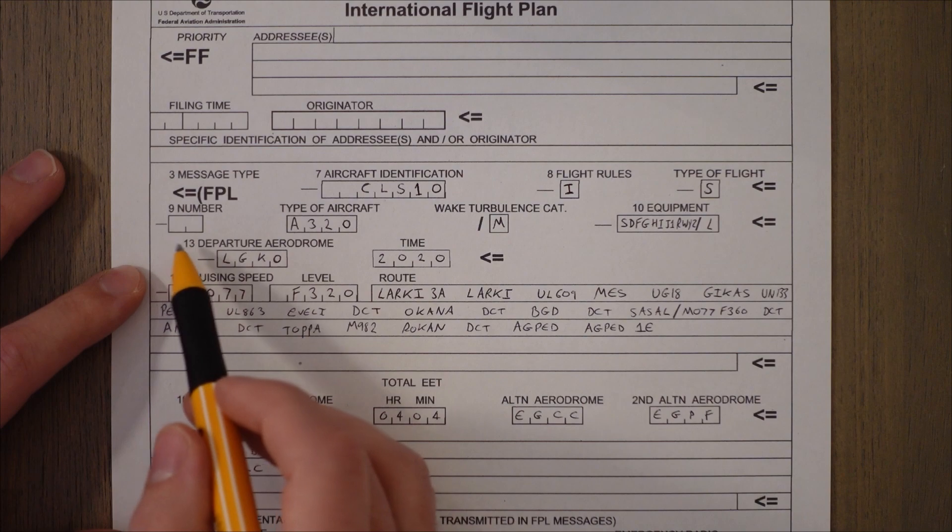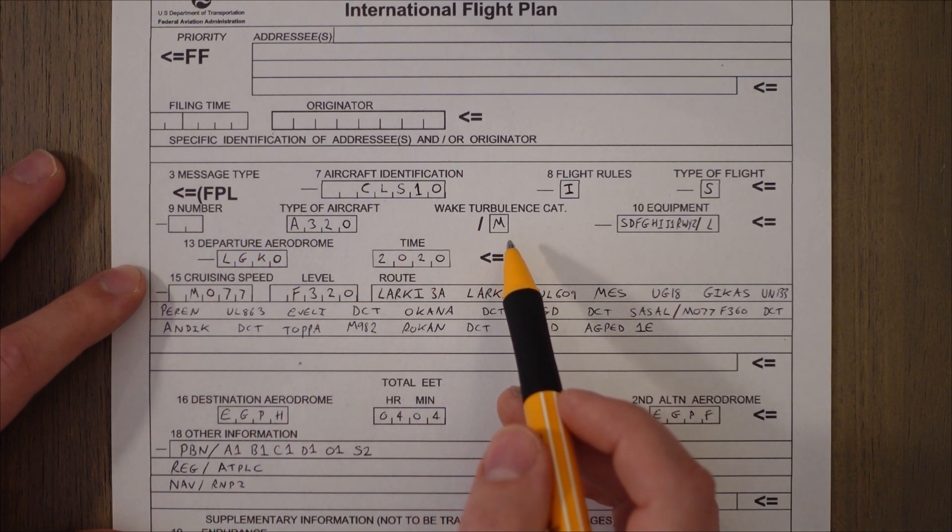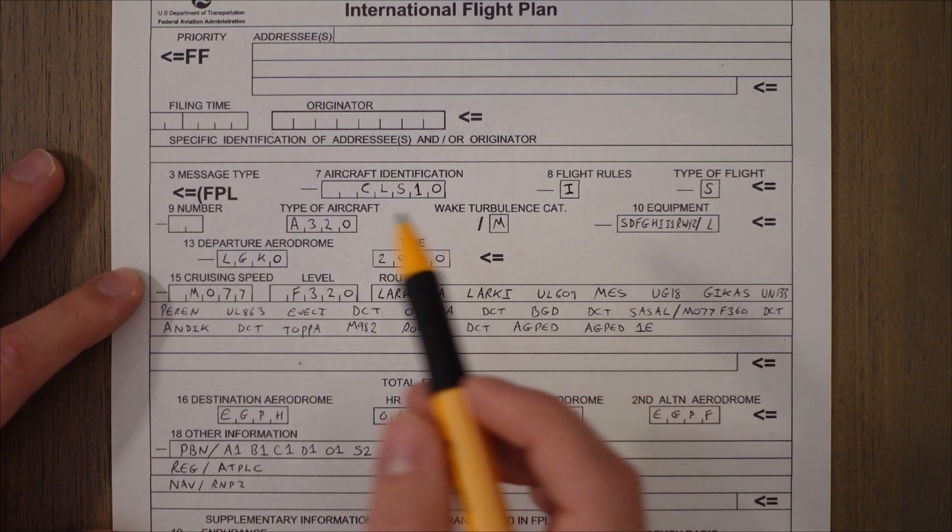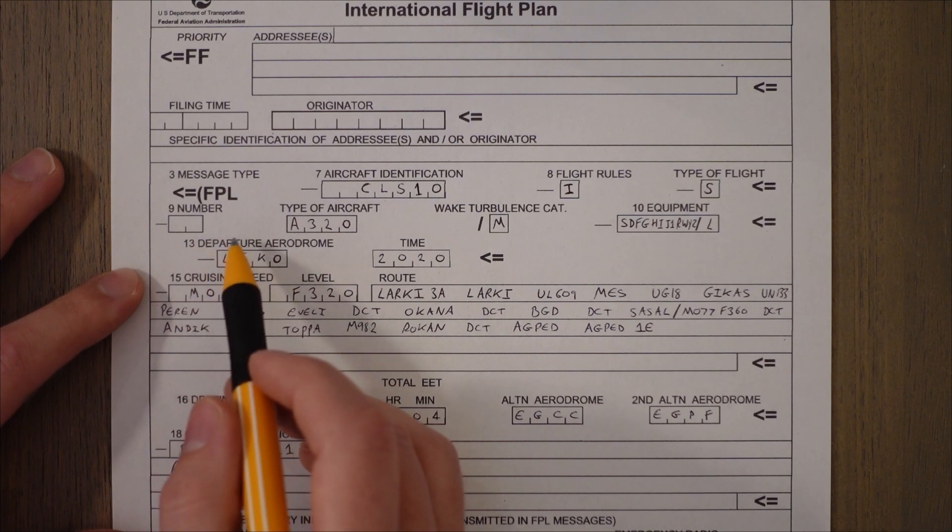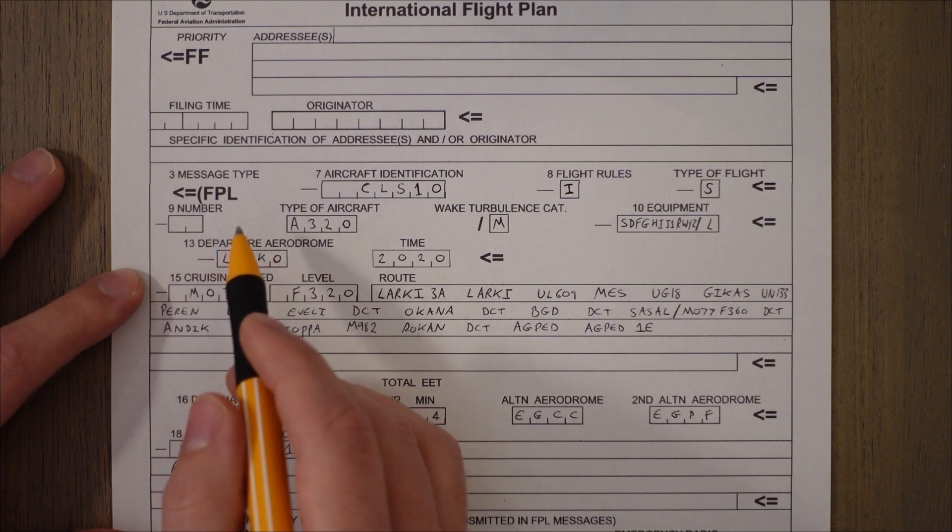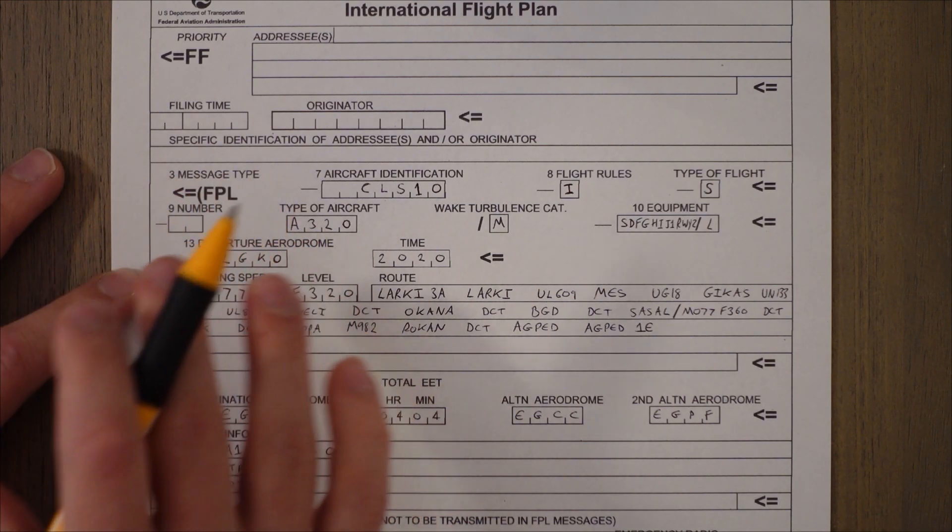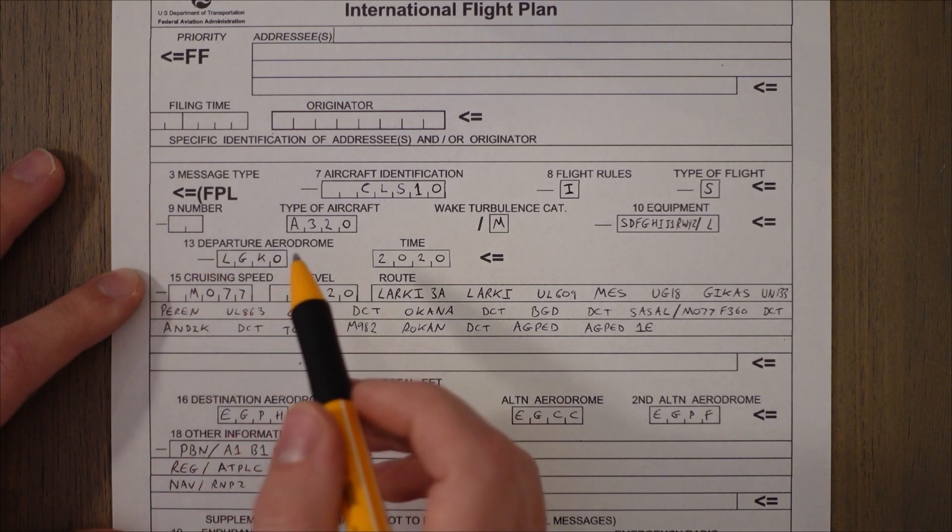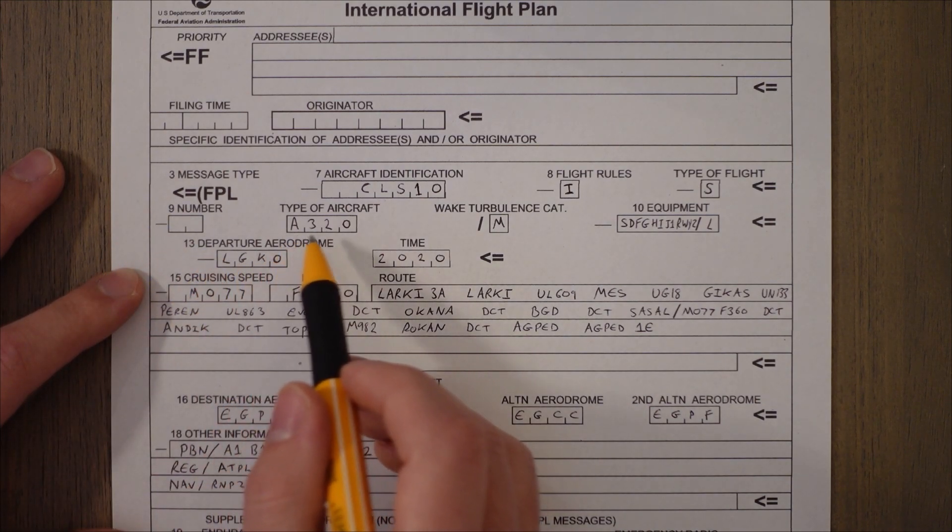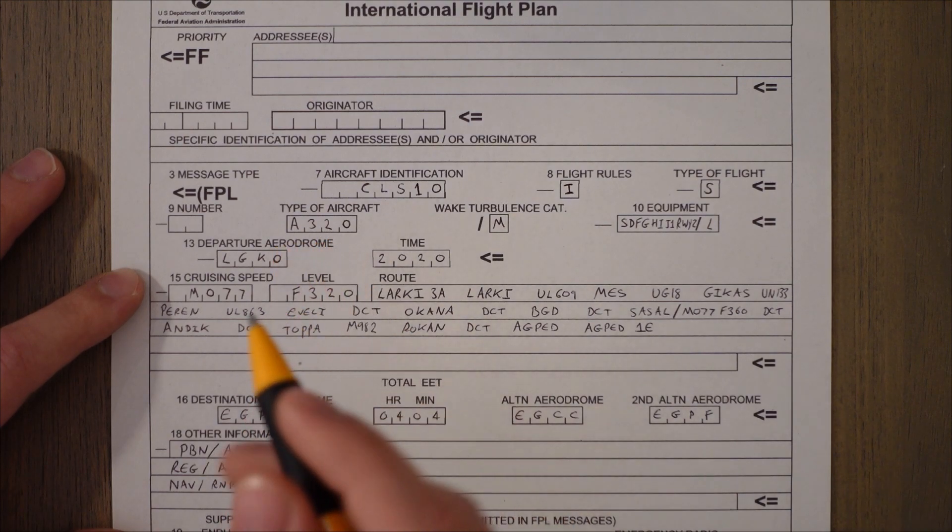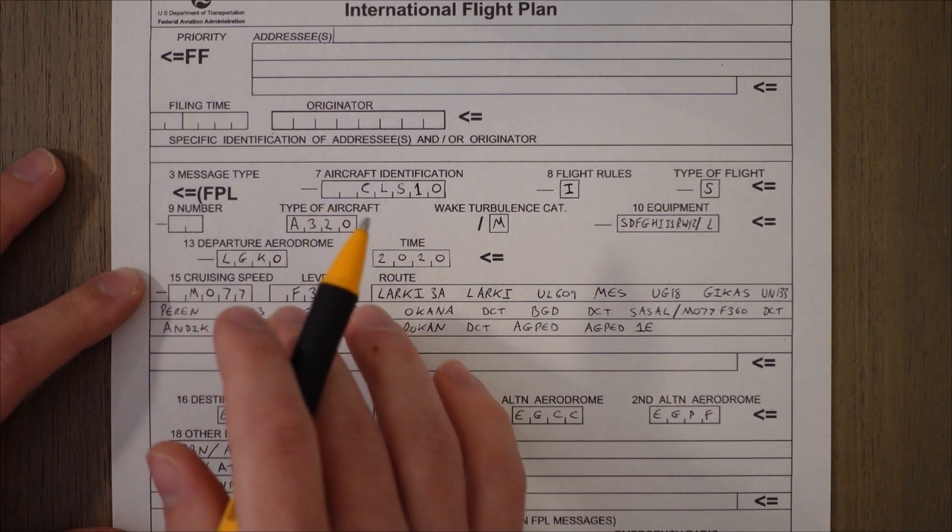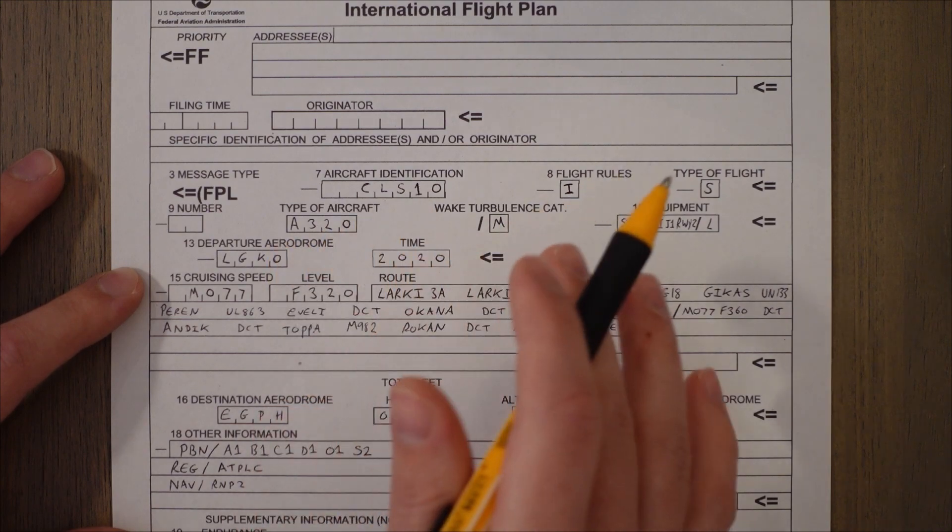Section 9 indicates the number, type, and wake turbulence category of the aircraft. So if we're doing formation flying we would enter more than one aircraft but if we leave it blank it's assumed to be one. So we're not going to fly in formation. Then the type of aircraft we're going to fly is an Airbus A320. All planes will have a specific code that can be found easily online and entered into this box.